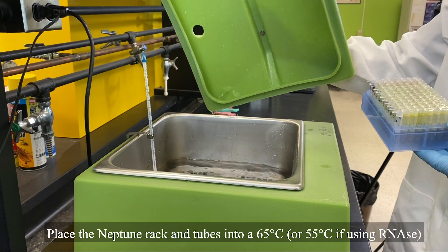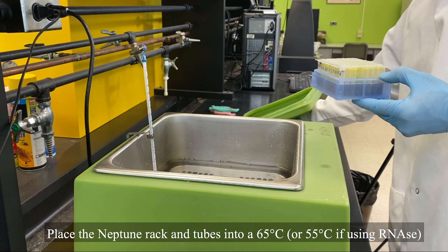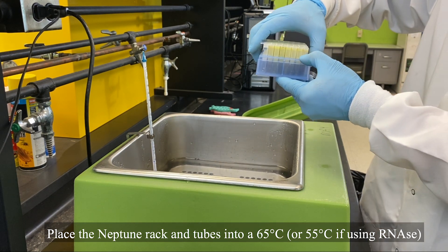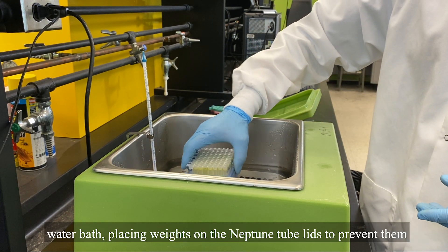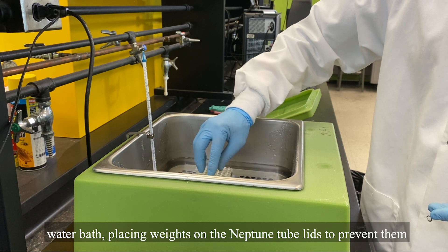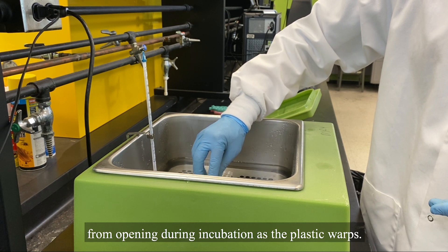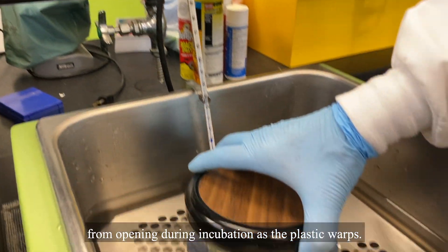Place the Neptune Racken tubes into a 65-degree Celsius or 55-degree Celsius, if using RNase, water bath. Placing weights on the Neptune tube lids to prevent them from opening during incubation as the plastic warms.